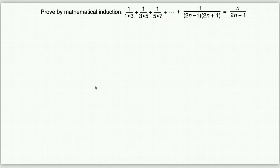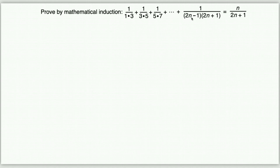We have to prove a P(n) statement using mathematical induction. The P(n) statement says: 1/(1·3) + 1/(3·5) + 1/(5·7) + ... + 1/((2n-1)(2n+1)) = n/(2n+1).